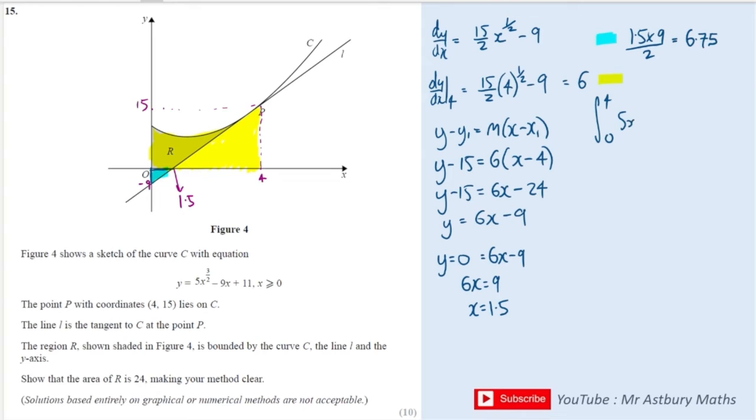And when I integrate this I will up the power to 5/2, I will then divide 5 by the new power and that will give me 2. And I will then up the power to get squared and then divide by the new power which will give me minus 9/2. And I will up the power to get 11X.